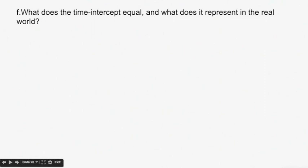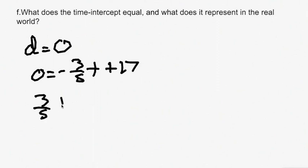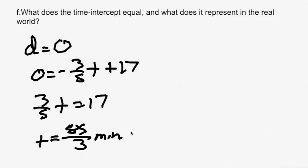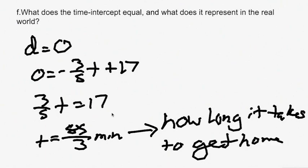Part F: what is the time intercept and what does it represent in the real world? The time intercept occurs when distance equals 0. Plugging in: 0 equals negative 3 fifths T plus 17, so 3 fifths T equals 17, giving T equals 85 thirds minutes. That represents how long it took you to get home — how long it takes to make the distance 0.